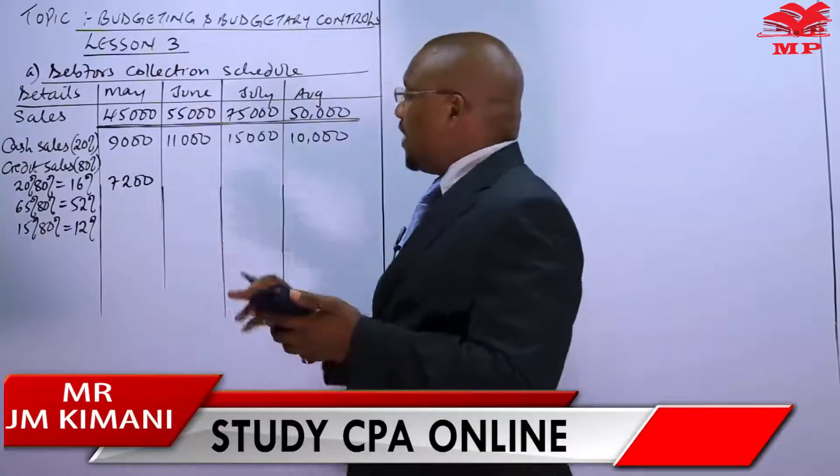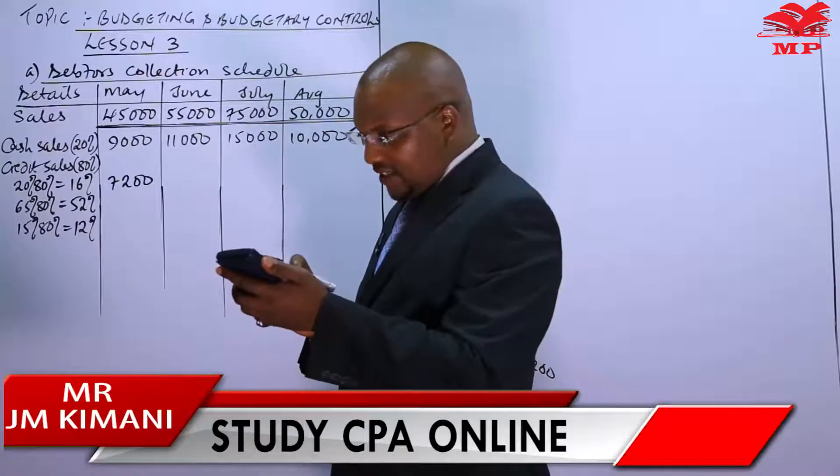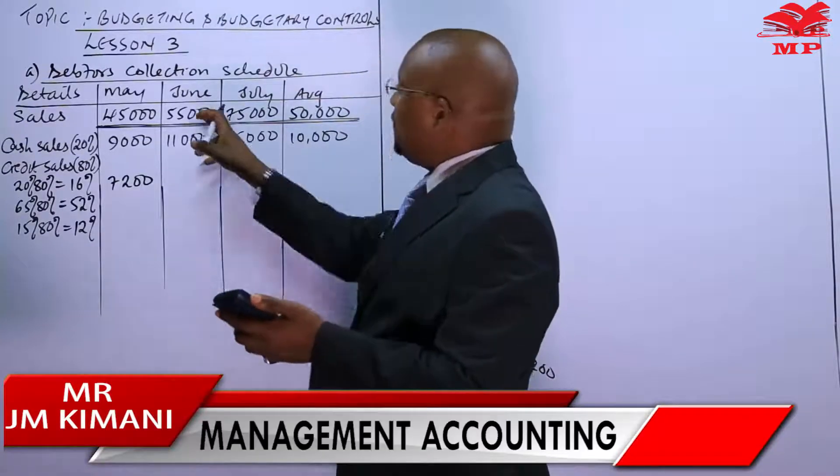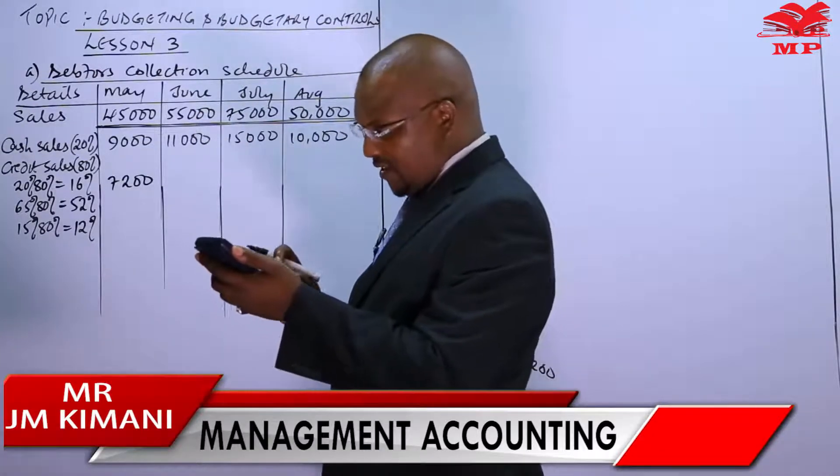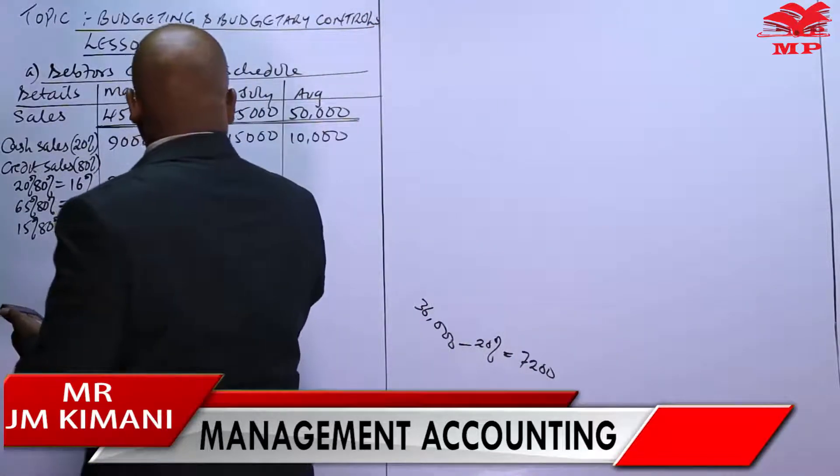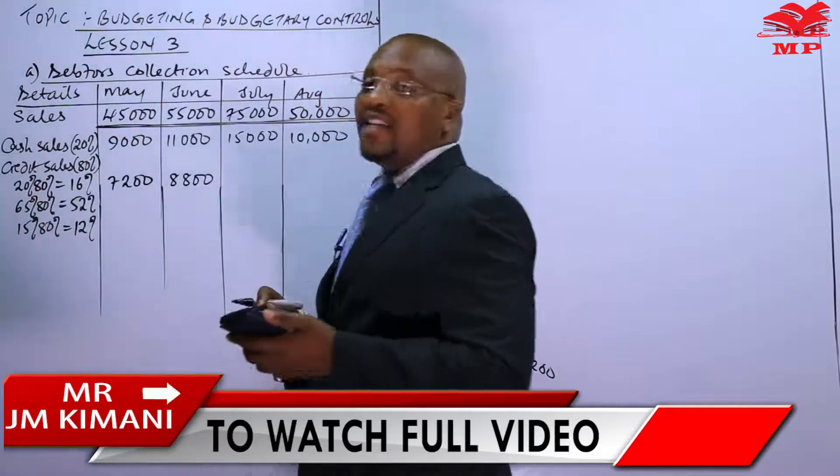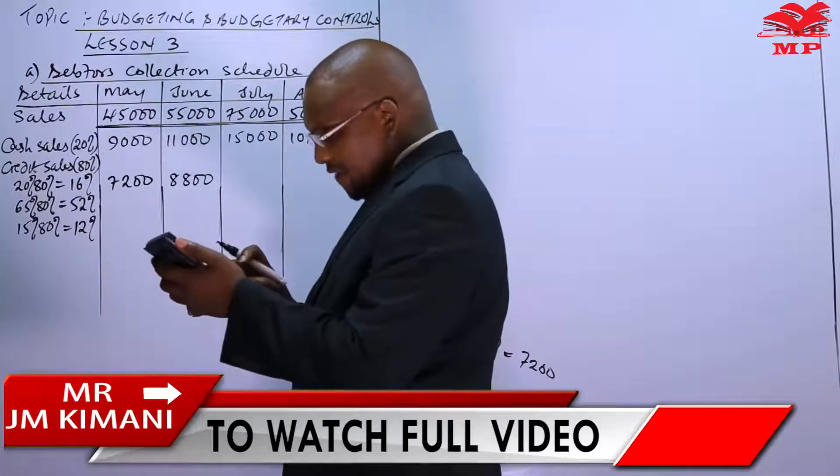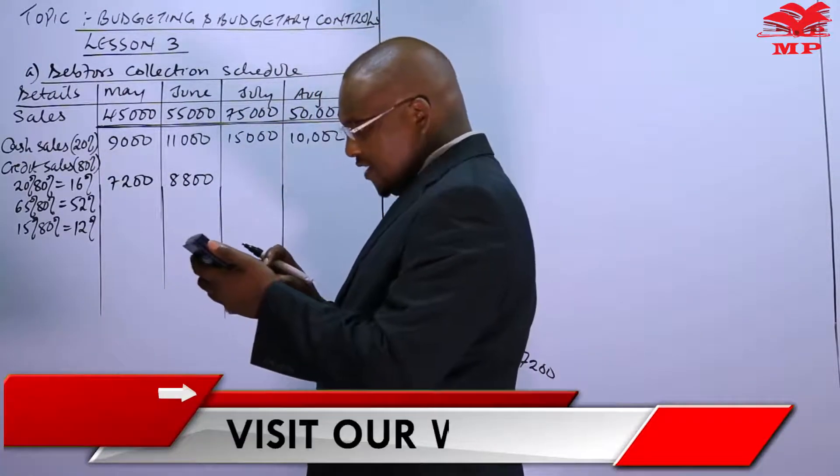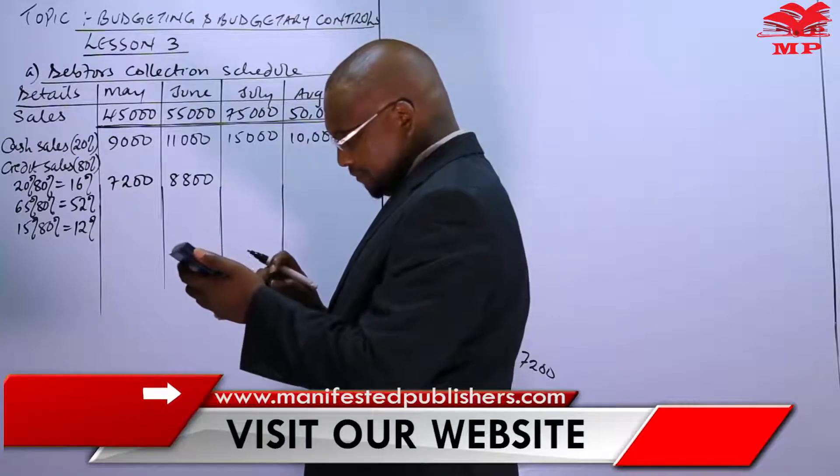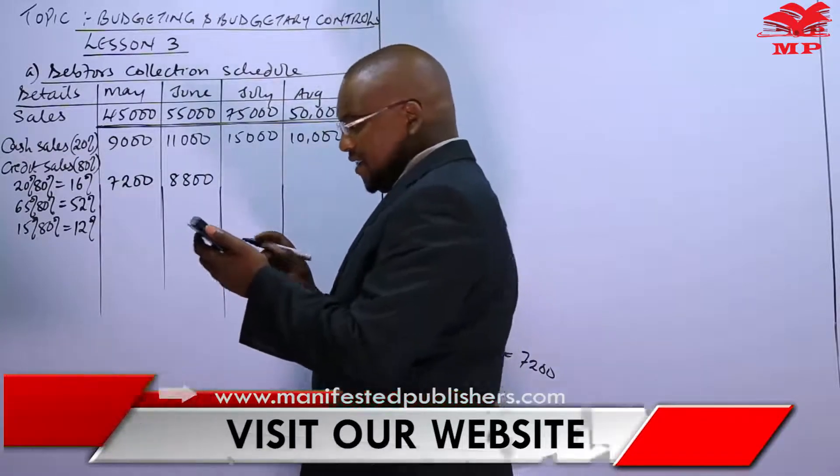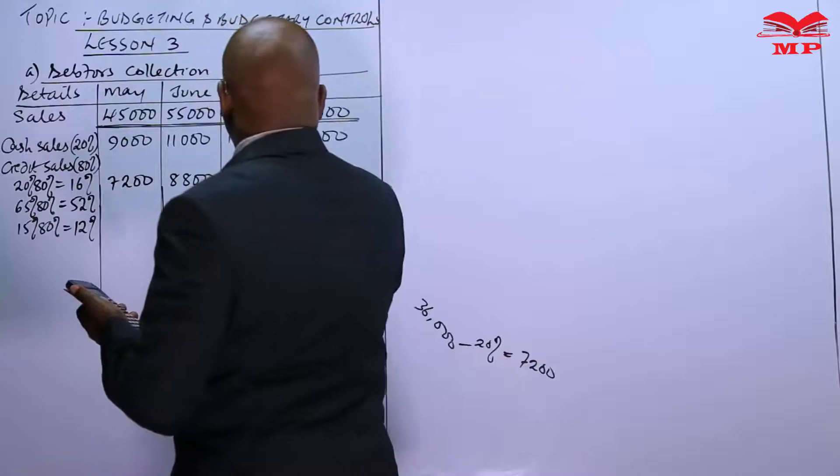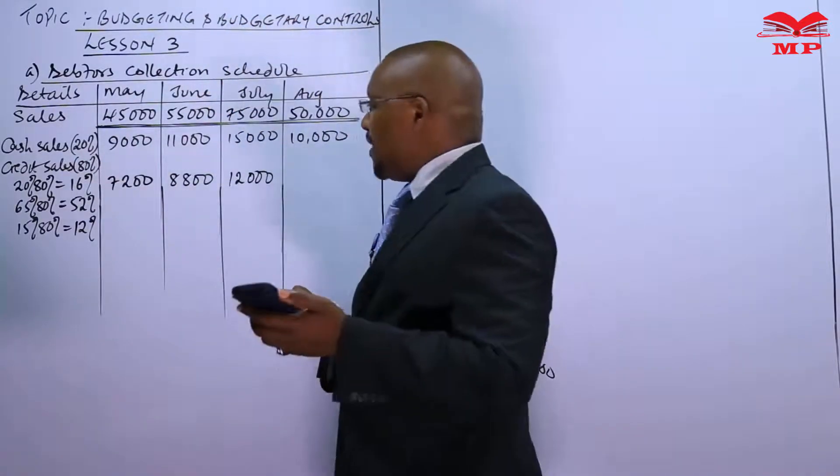Now the next one is 0.16 times the 55,000 total sales, this is giving us 8,800 paid or collected in the same month. Then 0.16 times the 75,000 total, this is 12,000 paid or collected in the same month.